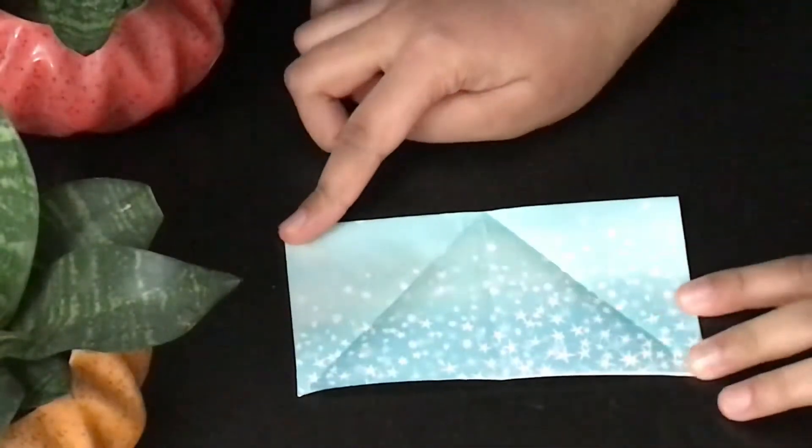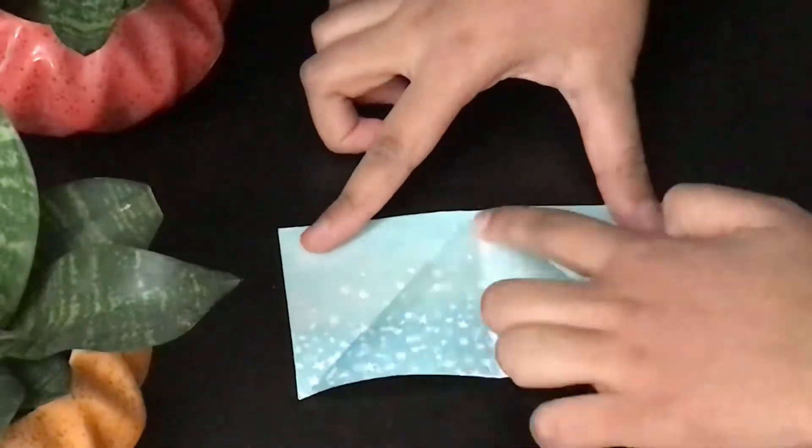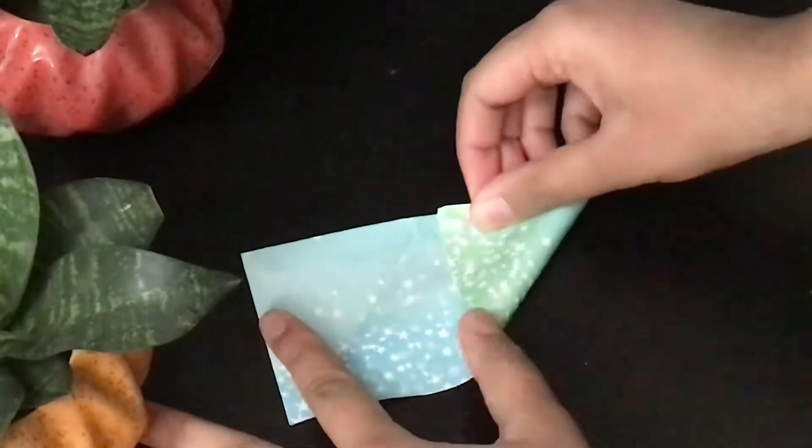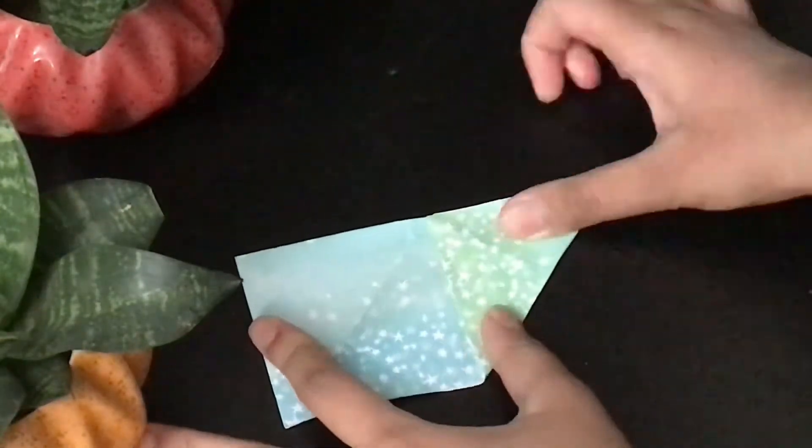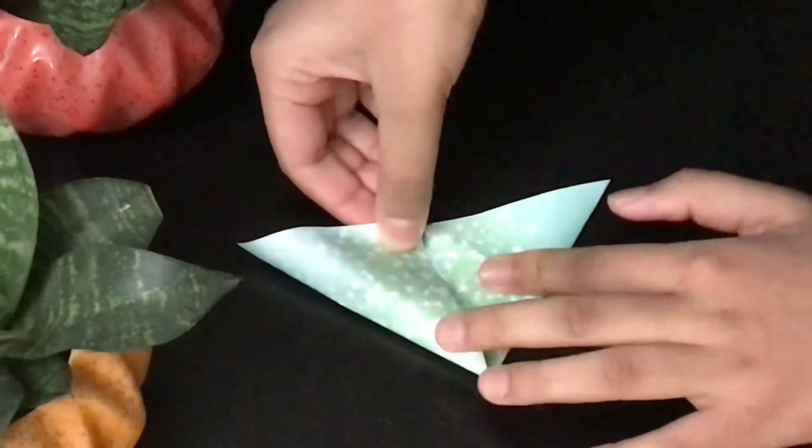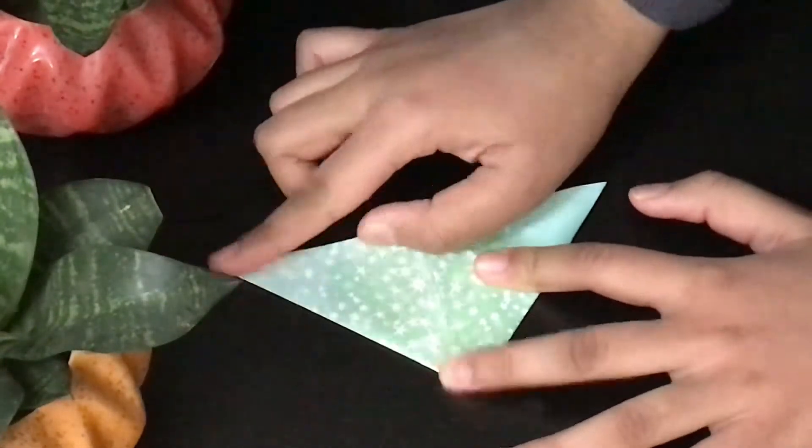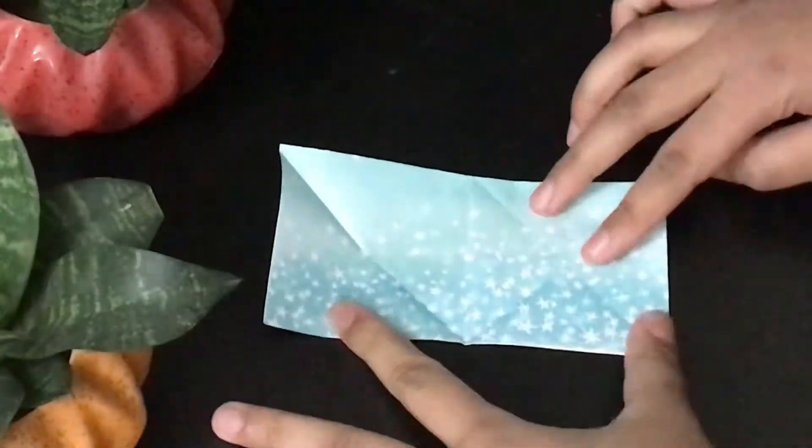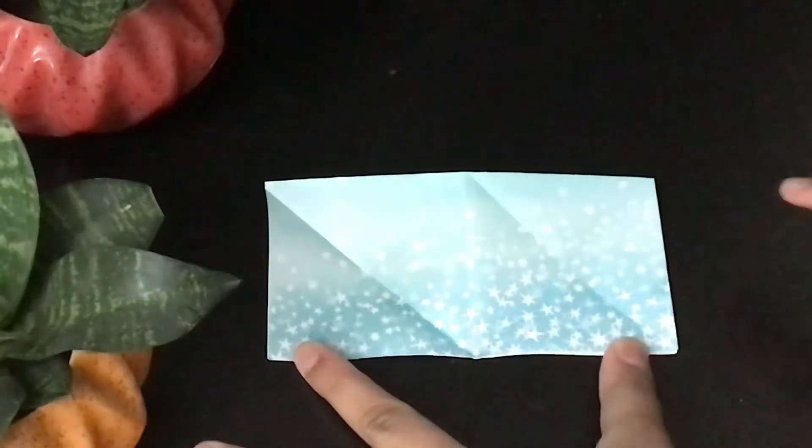Now, open it and bring the bottom corner towards the top one. You have to do the same from both the sides. This is how it will look. Next, open the flap. This will form two crosses.